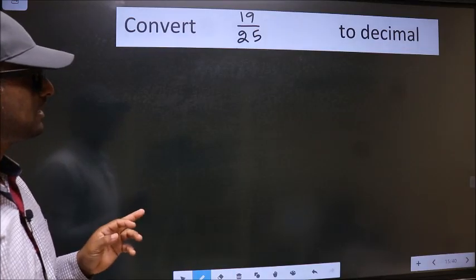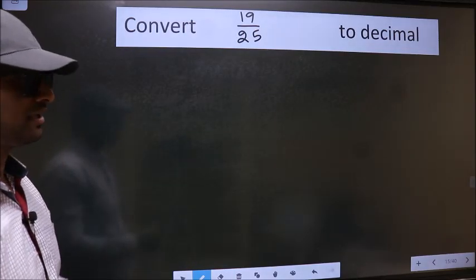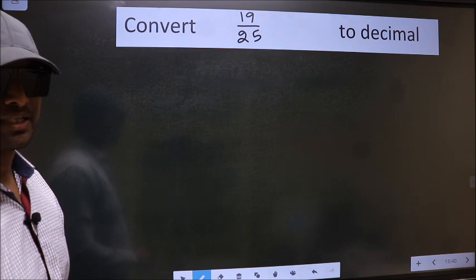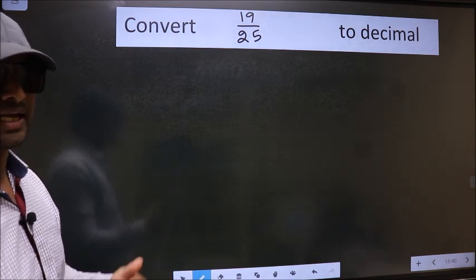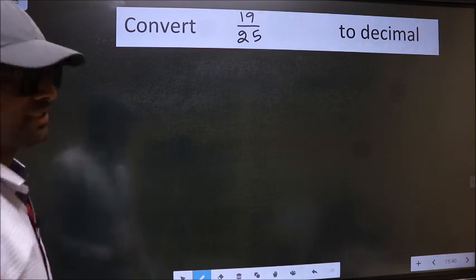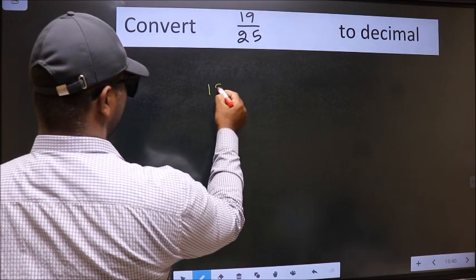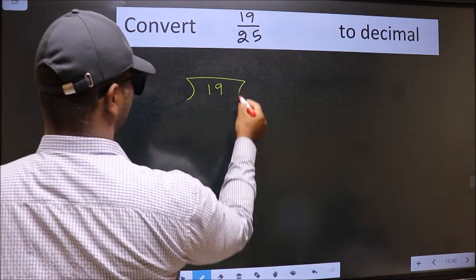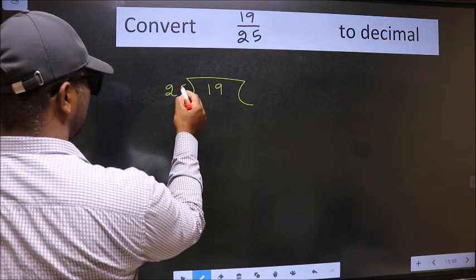Convert 19 by 25 to decimal. To convert to decimal we should divide it. And to divide we should frame it in this way: 19 here and 25 here.